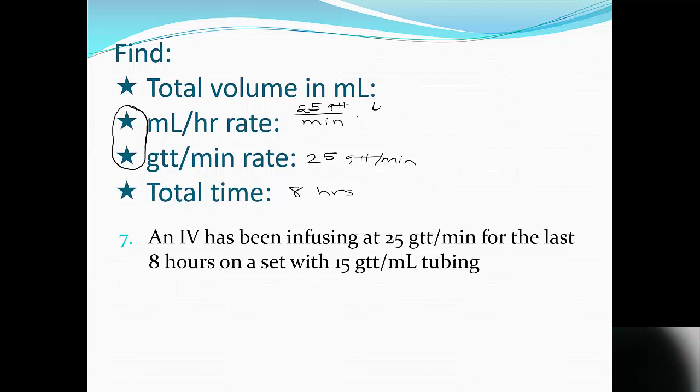So I'm gonna start with my 25 drops per minute. I need to change minutes into hours, so 60 minutes is one hour. And I need to change drops into milliliters, so drops is gonna have to go on the bottom. And based on what I read, 15 is my number of drops per one milliliter. So that cancels drops. And I'm ready to do my math.